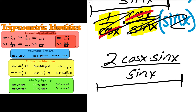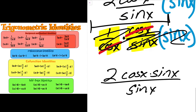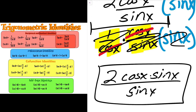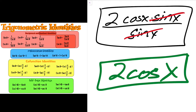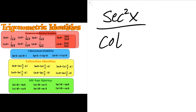That gives me 2 cosine x times sine x over sine x. The sine x's cancel, giving me a final product of 2 cosine x. That's it for number 27. Now I have the next problem: secant squared x divided by cotangent squared x plus 1.